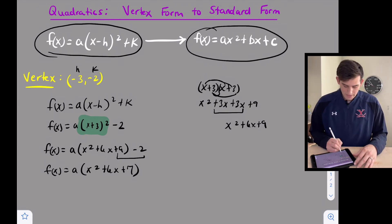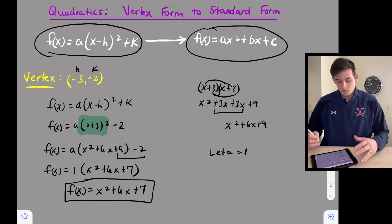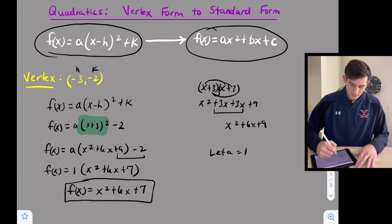Okay so if I have a right here I could just let a equal 1. So if we plug in 1 for a then that just takes a away. All right so if I plug 1 in right here now I can say f(x) = x² + 6x + 7 and that would be my final equation in standard form once we started from vertex form.